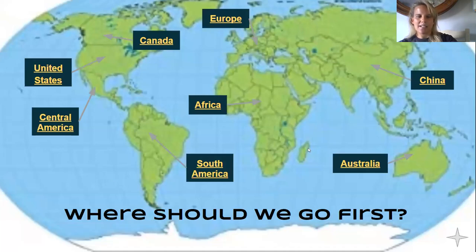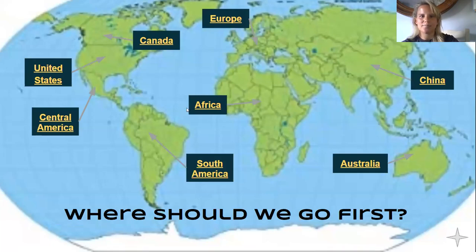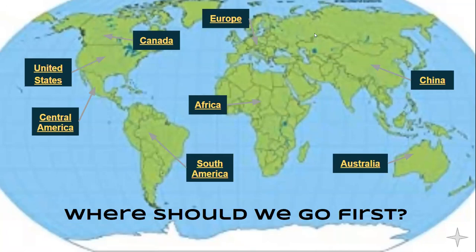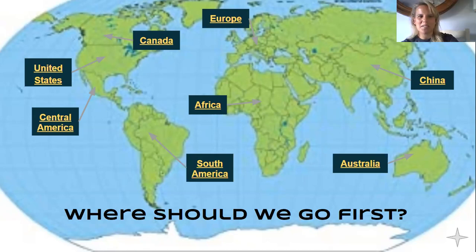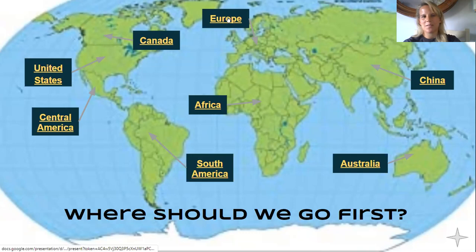Back to the map — where to next? We have Australia, South America, Africa, Central America, the US, Canada, Europe. We have votes for Europe, Africa, Canada, and Australia. We got a lot for Europe and Australia and Canada. Let's start with Europe, then go to Australia and Canada.